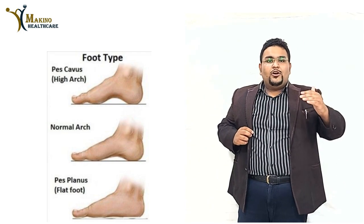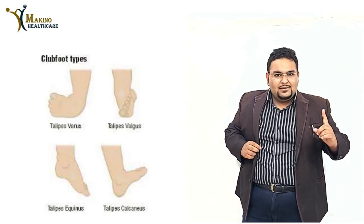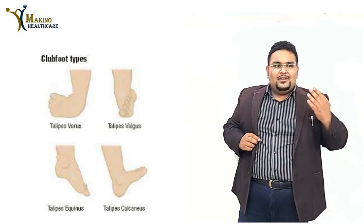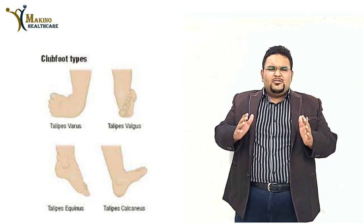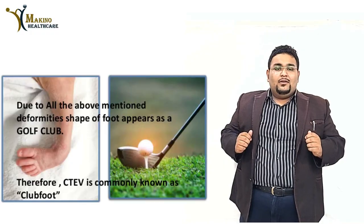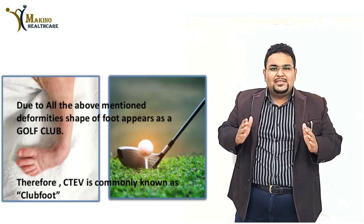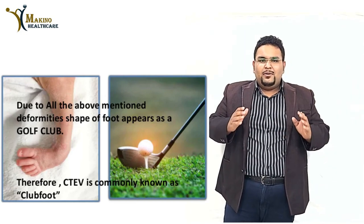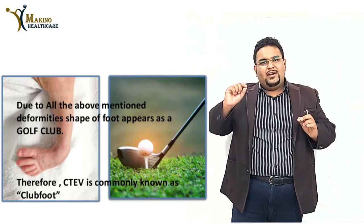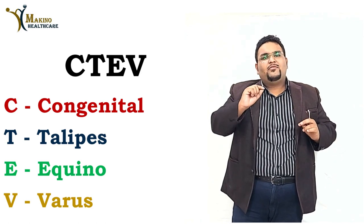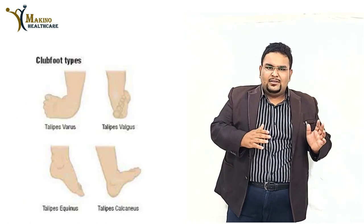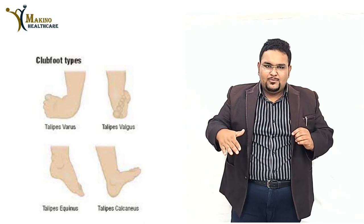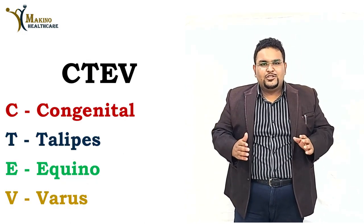The four important terminologies are: first, cavus; second, varus; third, adducted forefoot; and fourth, equinus deformity. CTEV is also termed club foot because untreated or severe cases take an appearance exactly like a club. Breaking down the acronym: C — congenital, occurring by birth; T — talipes, the foot and ankle complex; E — equinus, plantar flexed position; V — varus, defining the adducted and inverted position of the foot.